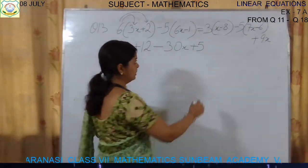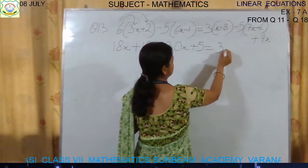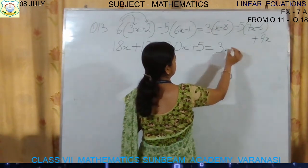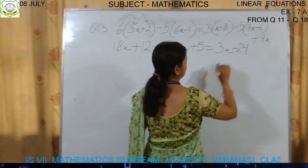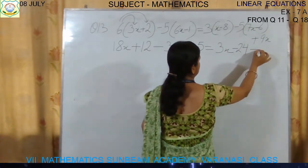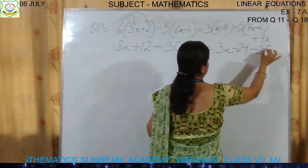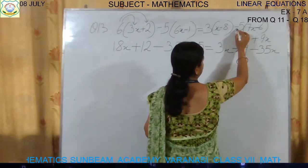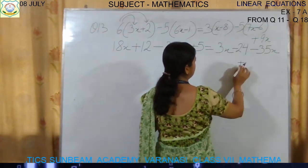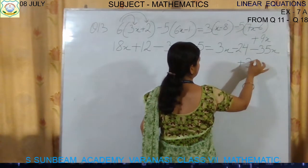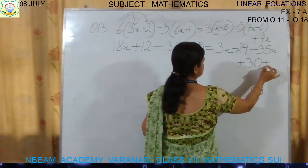Now move to RHS. 3 into x gives 3x. Plus times minus gives minus: 8 threes are 24. Then minus times plus gives minus: 5 sevens are 35x. Minus times minus becomes plus — same sign: 5 sixes are 30. And plus 9x is also there.